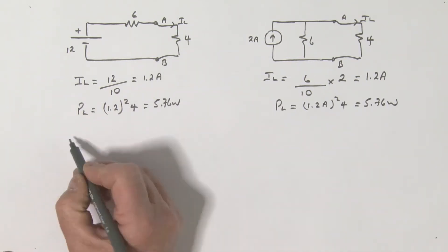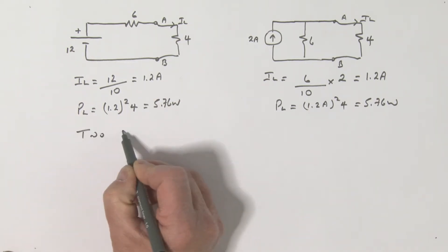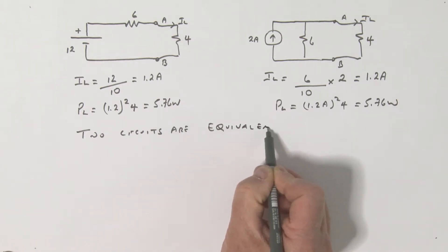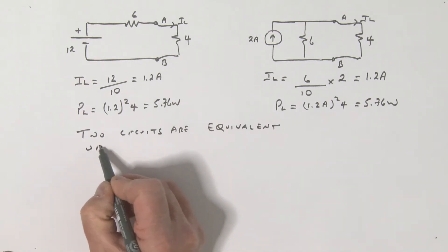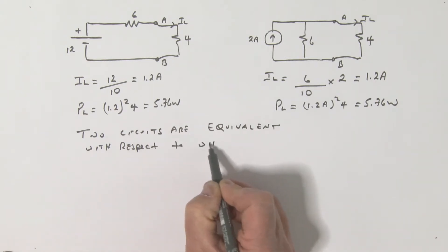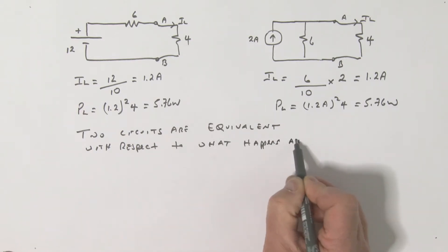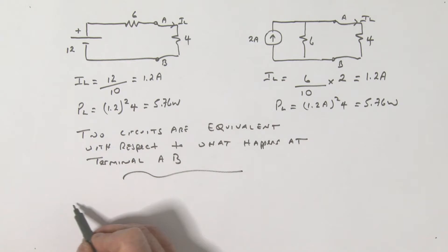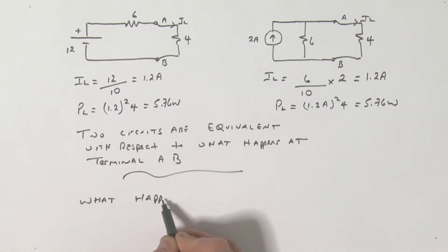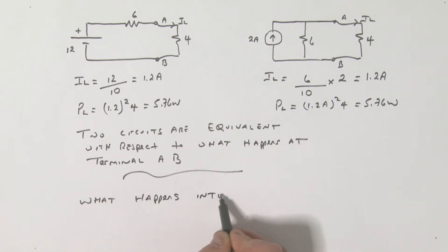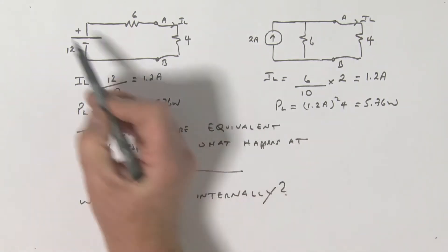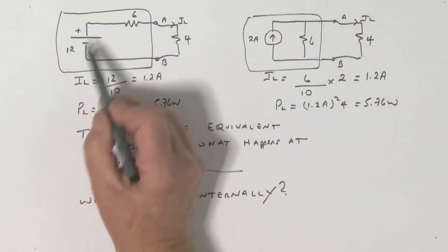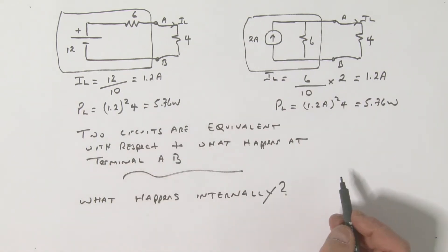We can say the two circuits are equivalent with respect to what happens at terminals A and B. Now I'm going to ask you a question: what happens internally? If I put a box around each circuit and have no way of opening the box, only accessing terminals A and B — is it going to be different inside?